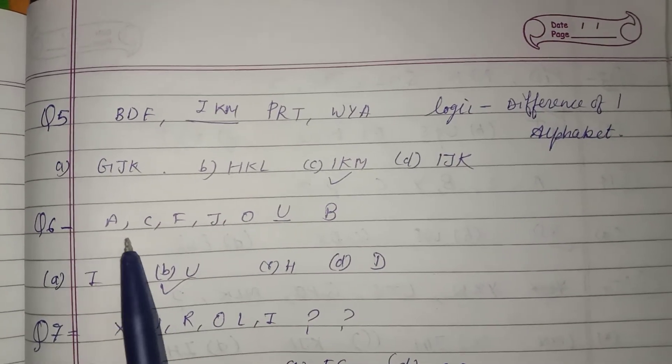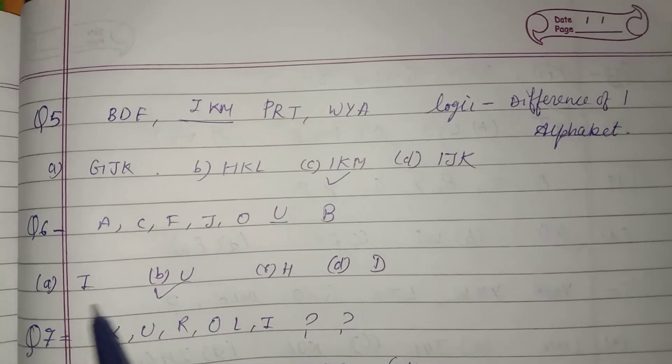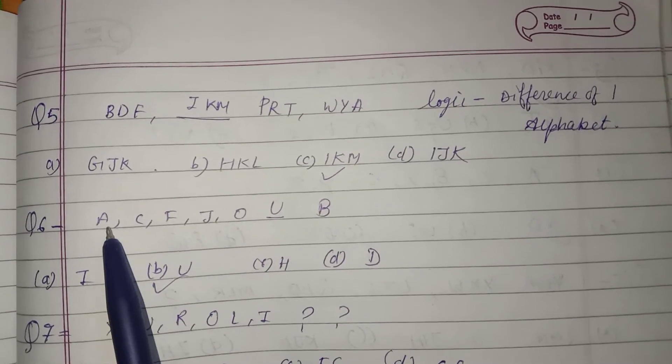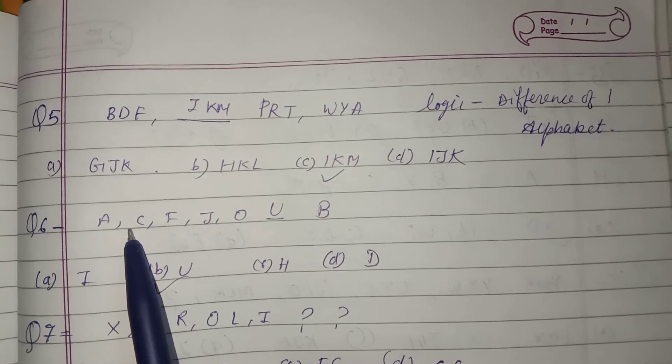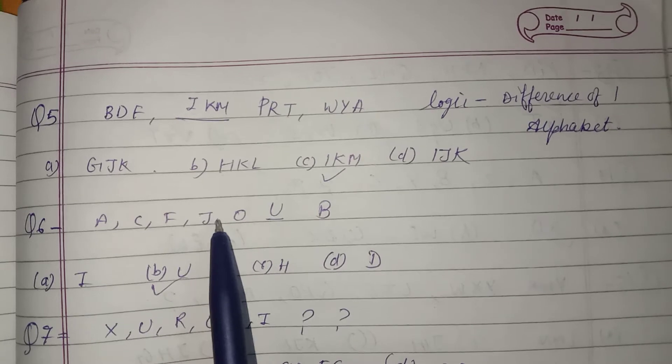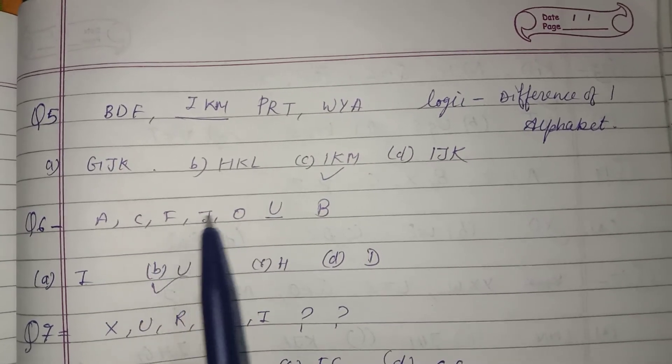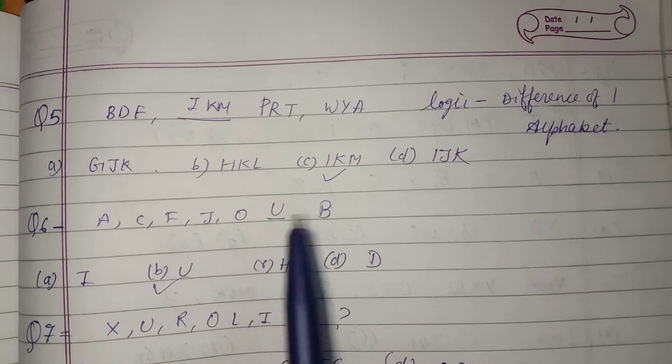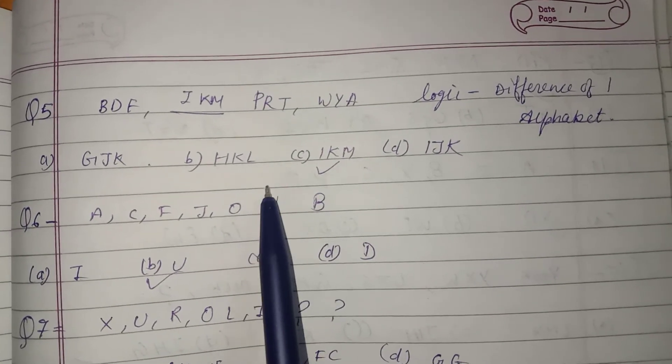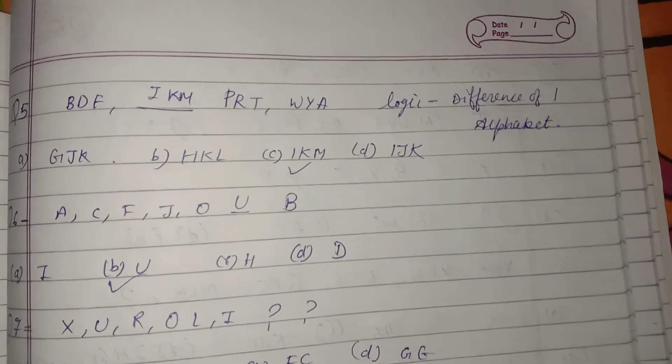Question number 6: A, C, F, J, O, and question mark. How do we find it? We find logic. A, B, C, D, E, F, G, H, I, J. So here are 1, 2, 3, 4, 5 letters skipped. This means difference is going to increase: 1, 2, 3, 4, 5. So after O, there are 5 differences. What will be after 5 letters? U is the answer.